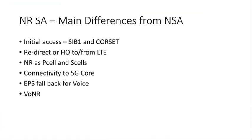Looking at the key differences between SA and NSA: the main difference is initial access. In a standalone NR network, initial access is also on NR, requiring SIB1 information to be communicated to the UE for selection and reselection. This requires the CORESET to be configured, which indicates where SIB1 is placed. CORESET does not exist in NSA — it must be configured when deploying SA. In SA, redirect and handover procedures also exist from LTE, and NR acts as both PCell and SCell.